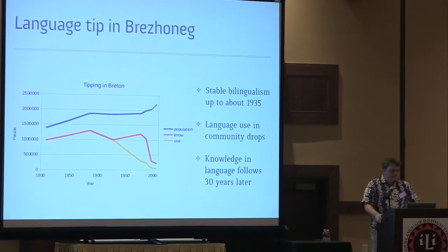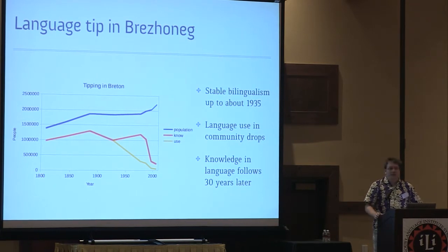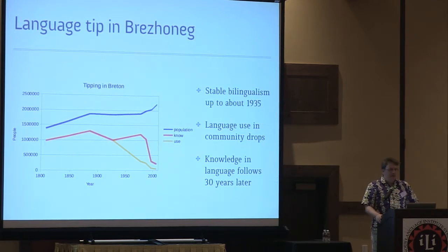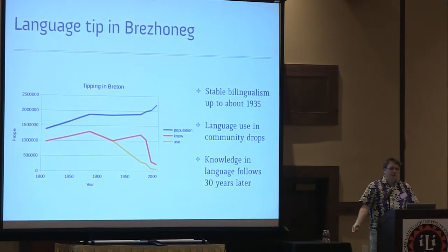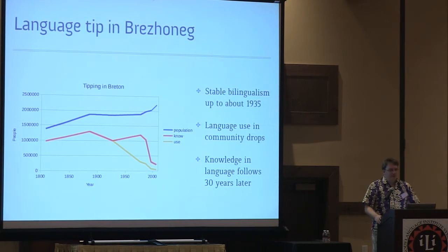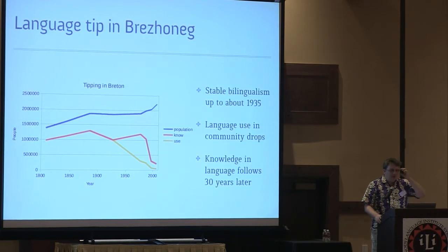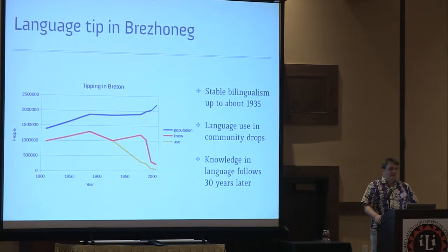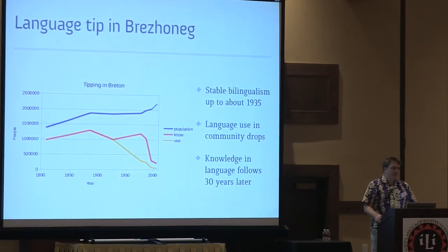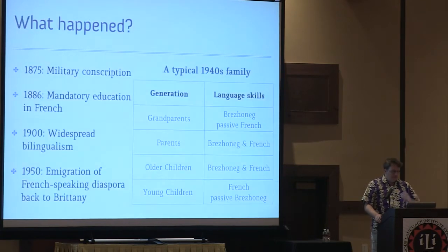Up until about 1935, we had stable bilingualism around the million-speaker mark, with people speaking and passing the language along to the next generation. Then, if you follow the yellow line, the users split off from the knowers — the users drop and just fall down. People who are able to speak the language no longer do. The orange knowers line stays constant for a while, but as users stop using the language, 30 years later the knowers also vanish — that's the Niagara Falls right there. Within one lifetime, within one household.